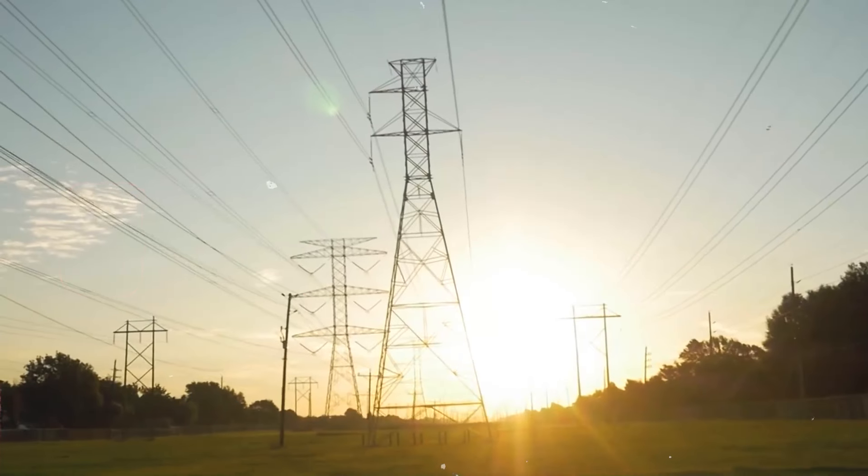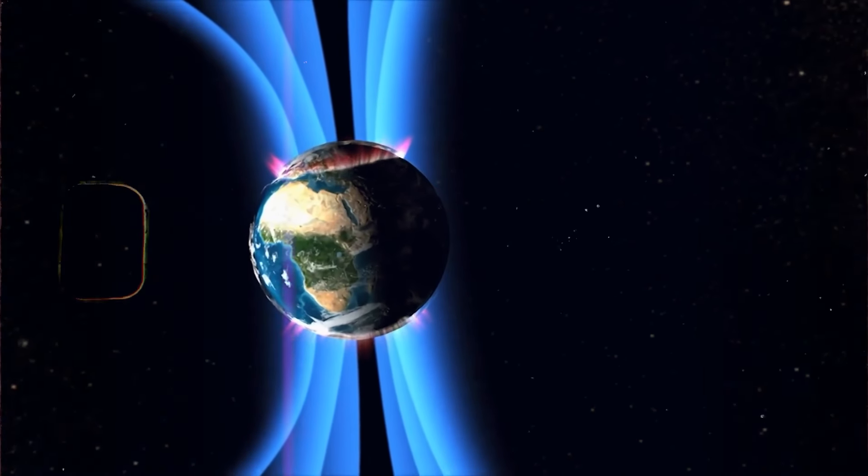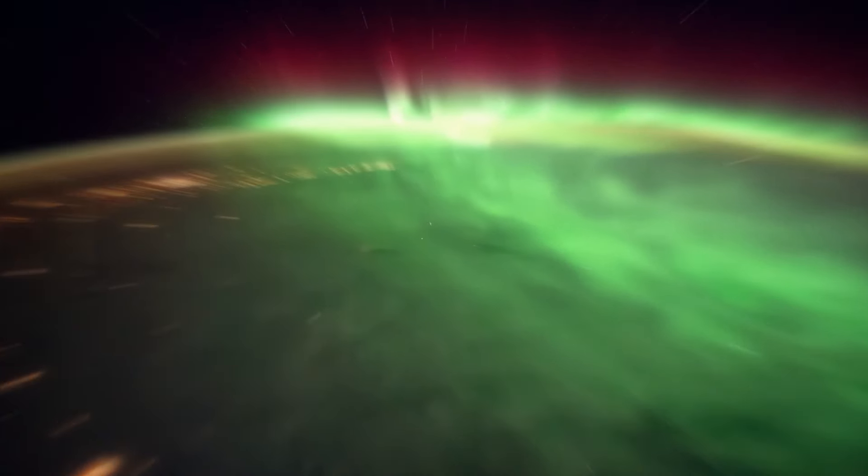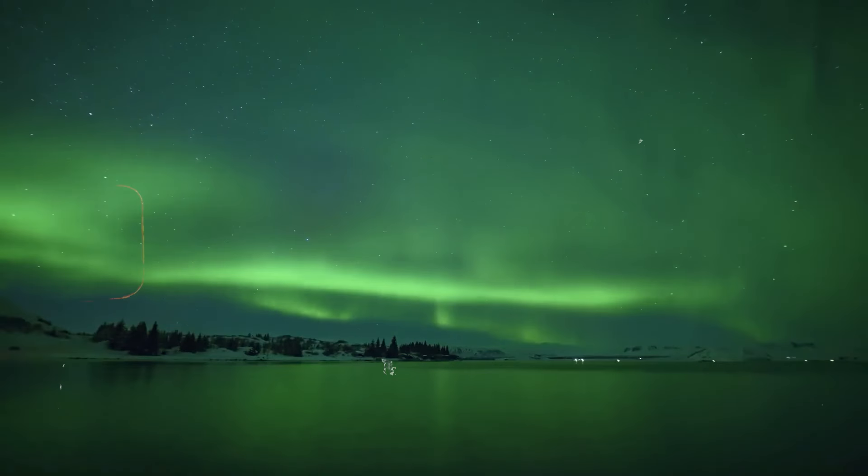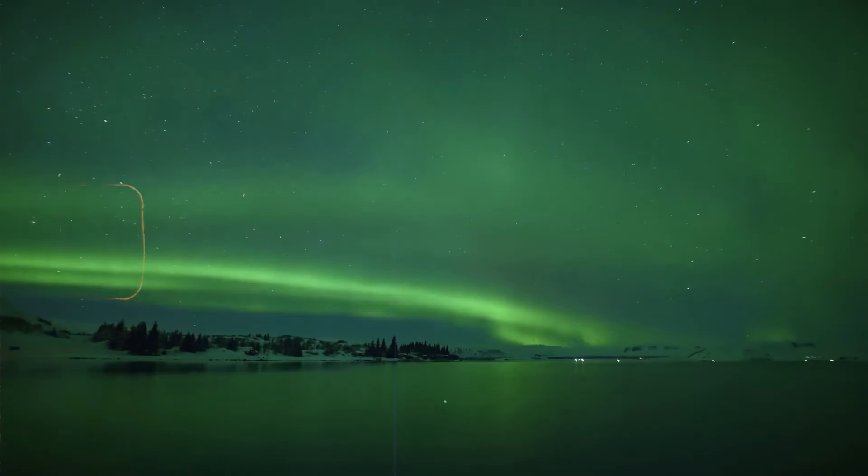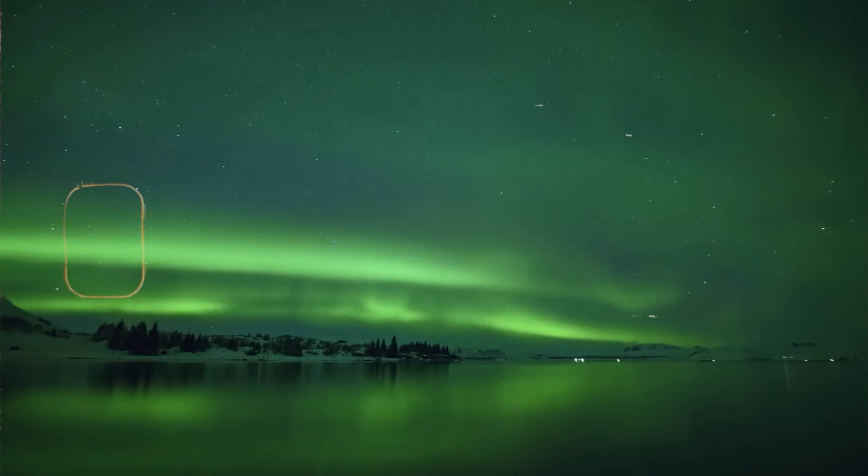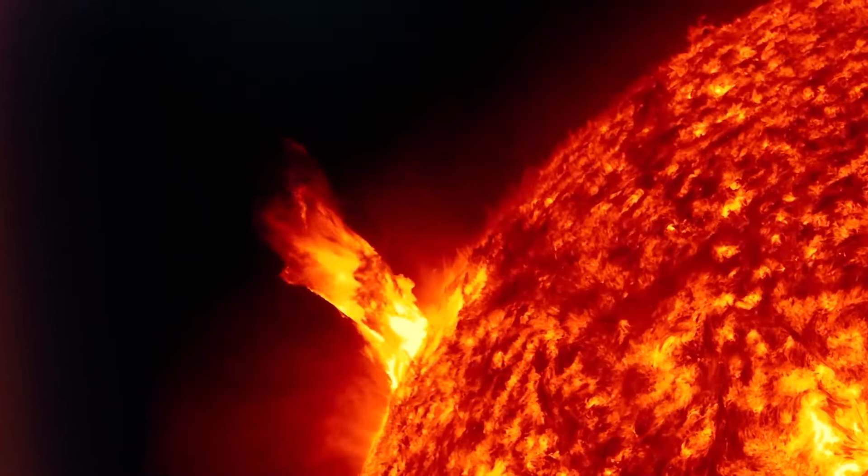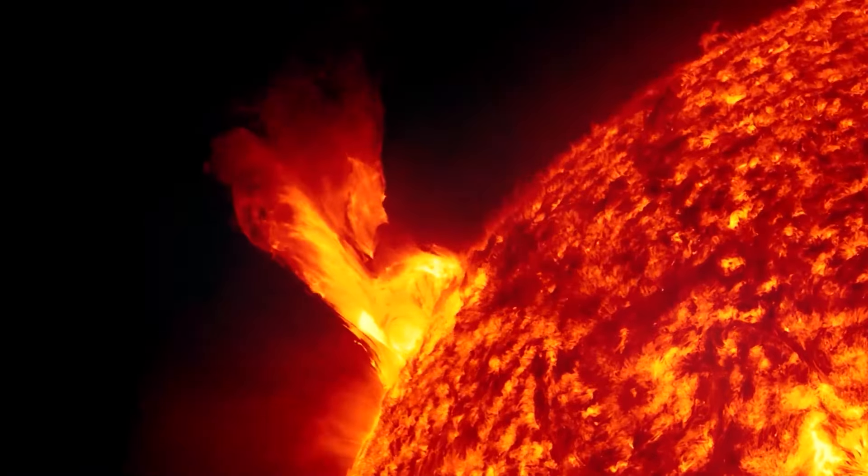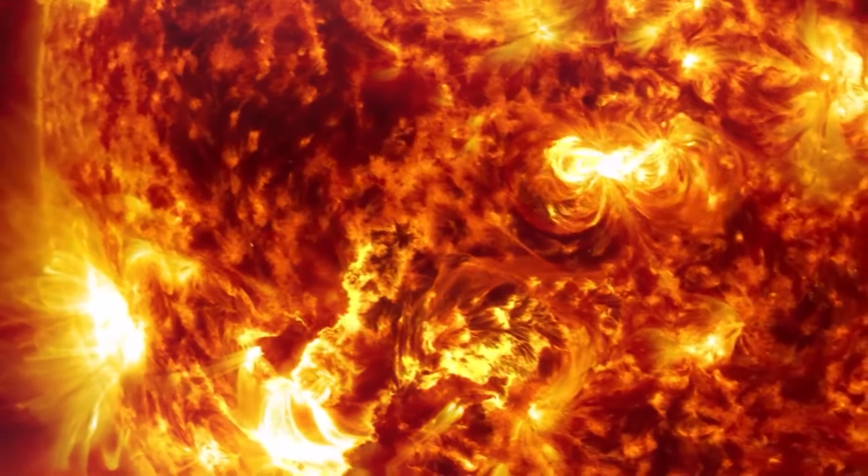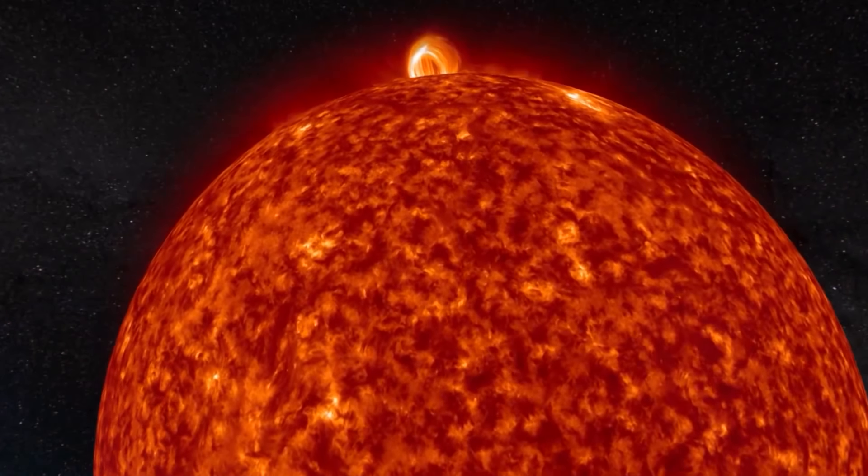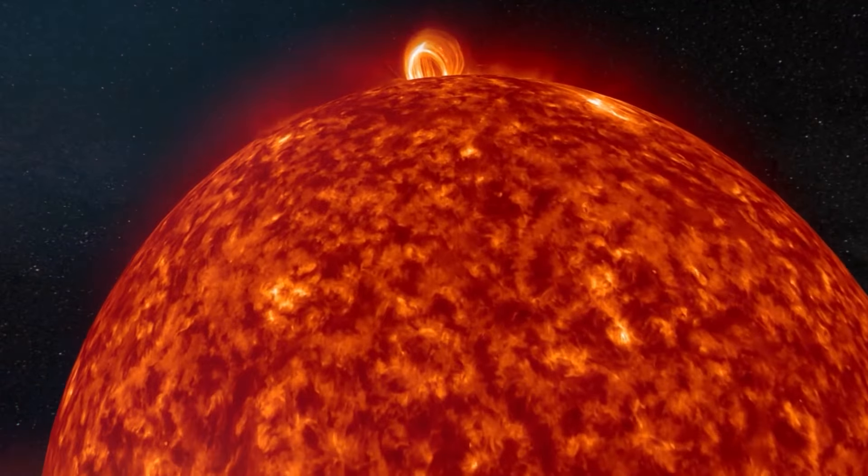Fast forward to today, and the Sun is once again in the throes of a significant solar cycle. Solar cycle 25, which began in December 2019, is rapidly intensifying. Recent solar activity has included powerful X-class flares and CMEs, reminiscent of the early stages of the Carrington event. On June 1, 2024, an X-1.4 flare erupted from the Sun, followed by another X-1.1 flare on May 31, 2024. These flares are harbingers of heightened solar activity that can have far-reaching consequences.